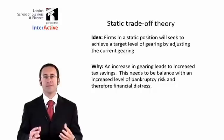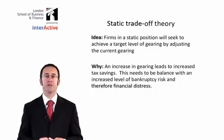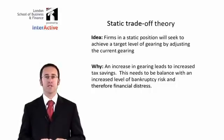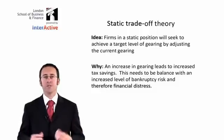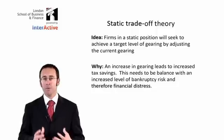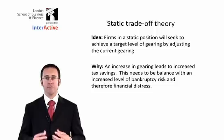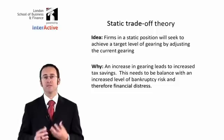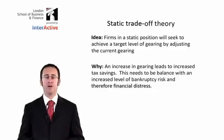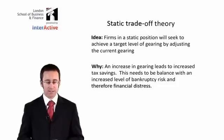Static trade-off theory is very minor in comparison to pecking order theory, to the point where studies have shown it doesn't operate that much in the real world. But we'll spend a moment briefly mentioning it. In effect, it brings on board the Modigliani and Miller theories from 1963, whereby they incorporated corporation tax, which gave rise to a minimum weighted average cost of capital when bankruptcy risk was incorporated, and that minimum WACC gave the maximum value of a business.